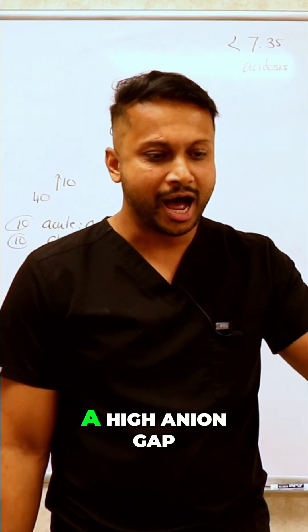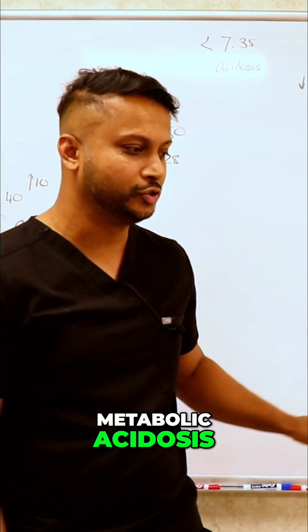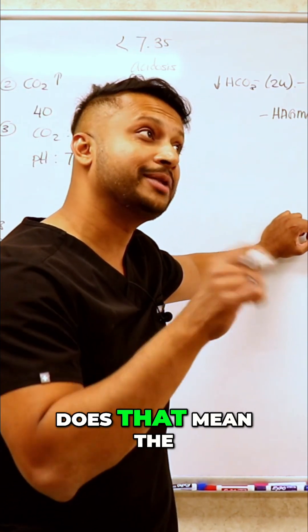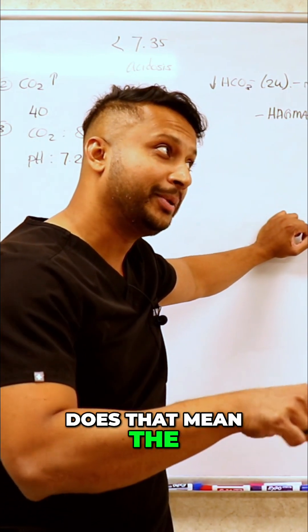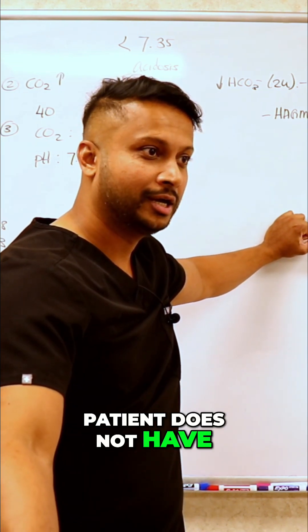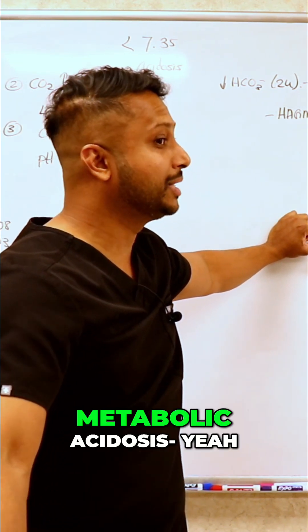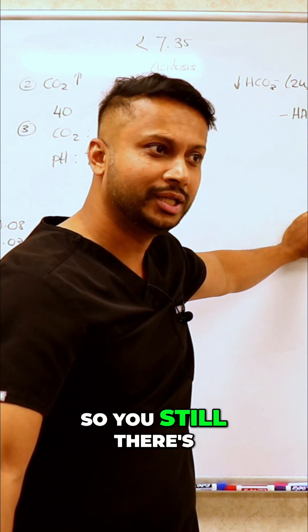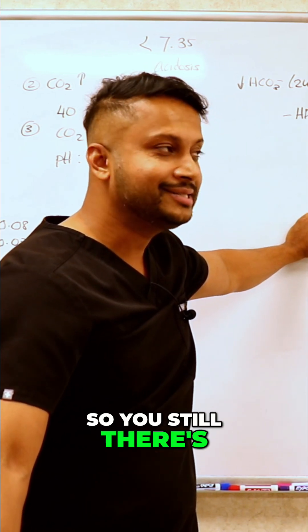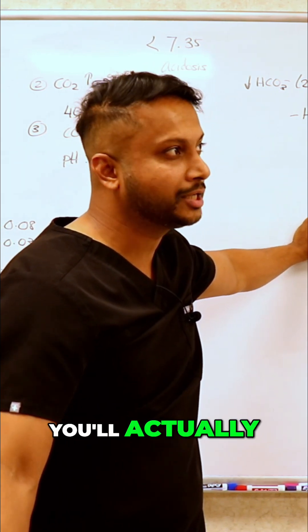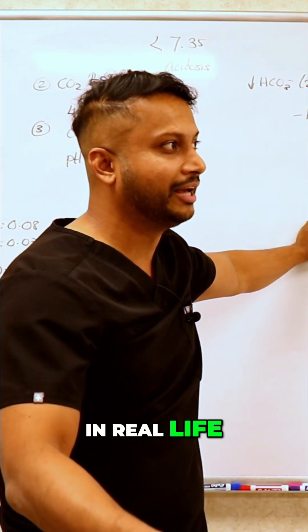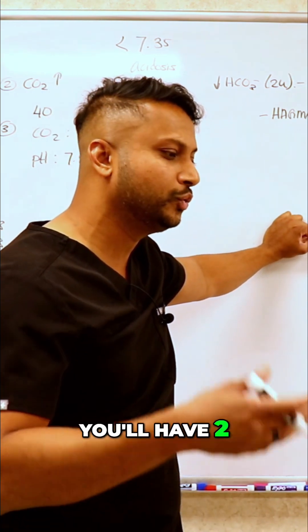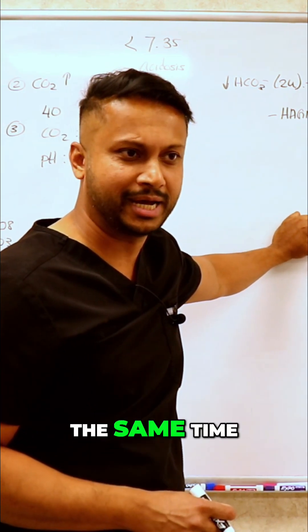If a patient's got a high anion gap metabolic acidosis, you've figured out one part of the story. Does that mean the patient does not have a normal anion gap metabolic acidosis along with it? It can be. In real life, there's never truly a single acid-base disorder — typically you'll have two, three, or four problems happening at the same time.